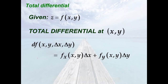Now we go to total differential. For a differentiable function of two variables, z is equal to f of x, y. The total differential df at the point (x, y), which is sometimes denoted as dz, is equal to the partial of f with respect to x times delta x, plus the partial of f with respect to y times delta y, where delta x and delta y represent changes in x and y respectively.